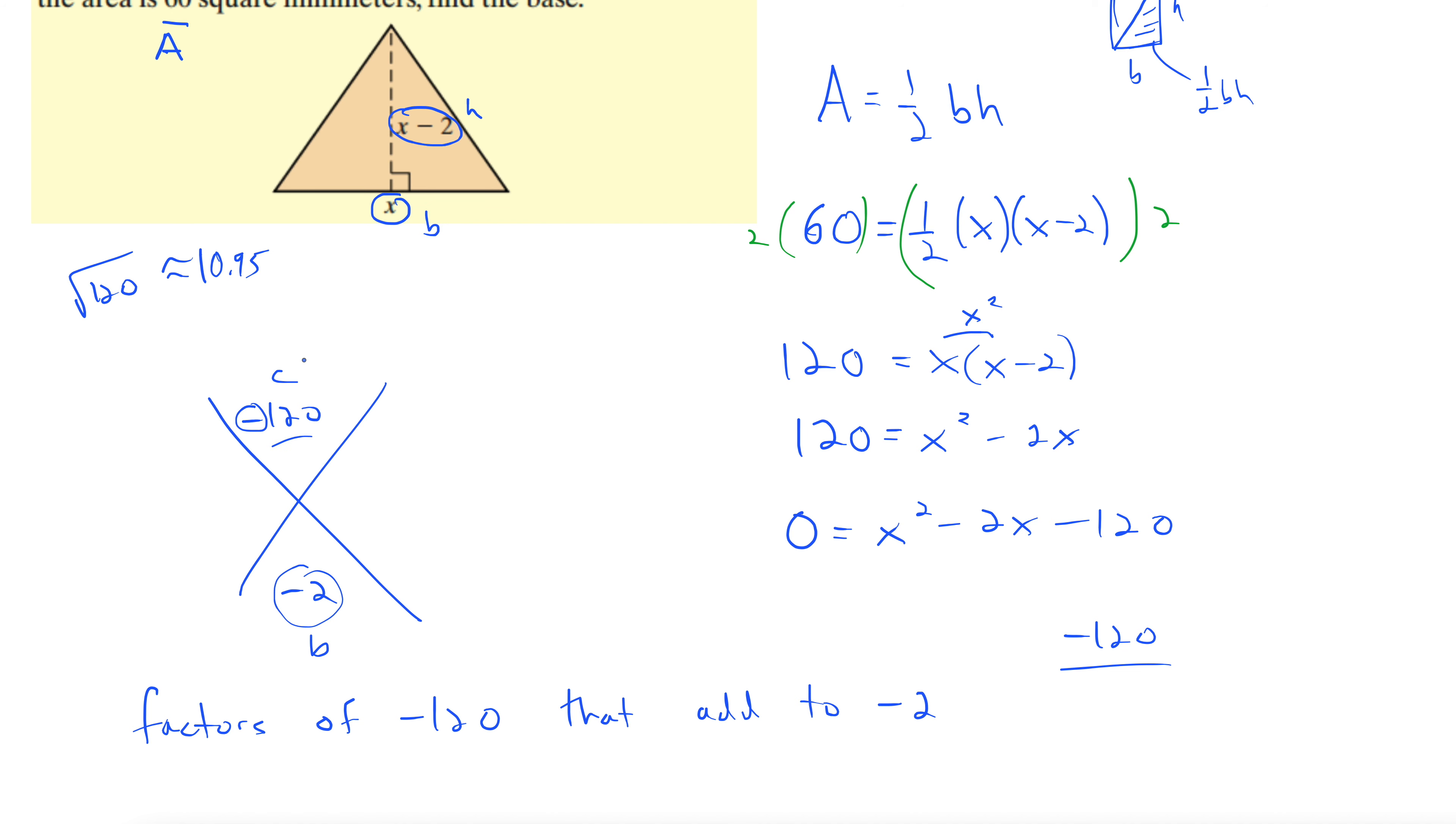So I'm thinking 11. Nah, that doesn't do it. Let's try 12 times 10. We need to make one of these negative, but that's going to do the trick, right? Because we can get to negative 2 by making this negative 12 times 10. And sure enough, negative 12 plus 10 is negative 2. So we have found two numbers that multiply to negative 120, add to negative 2.